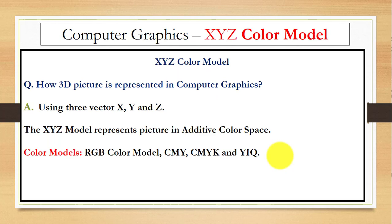XYZ color model. So, first question is how 3D picture is represented in computer graphics? For the representation of 3D objects, we use three axes: X axis, Y axis, and Z axis. In this case, we are using XYZ color model for the representation of pictures in additive color space. Here, we can replace XYZ with different color models.